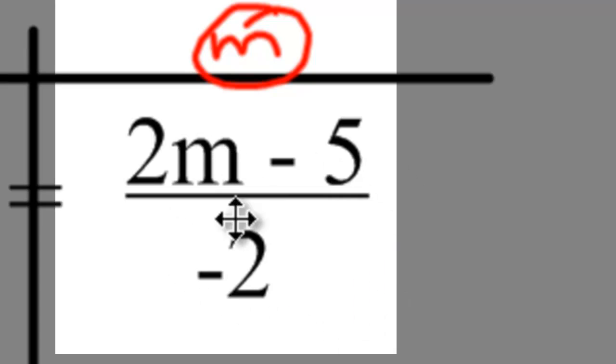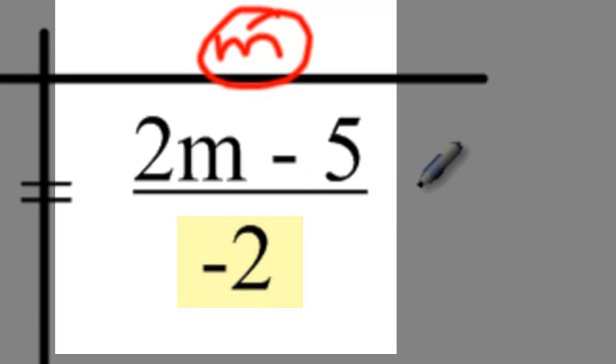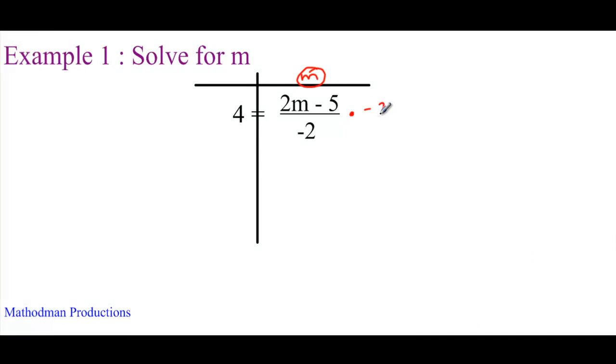I would wish that the negative 2 wasn't there. Since this is division of negative 2, to undo it, you can multiply by negative 2, both sides. Negative 2 times 4, that's negative 8. The negative 2's right here cancel out. So I'm left with 2m minus 5.